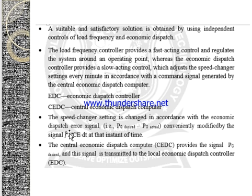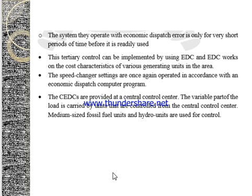While considering the speed change settings, when changed in accordance with the economic dispatch controller, it is modified by the signal ACE — specifically the integral ACE — at that instant of time. The CEDC provides the signal and this signal is transmitted to the local ADC. The system which operates with the economic dispatch error does so for only a very short period of time before it is readily resolved. This territory control can be implemented using EDC, which focuses on the cost characteristics of the generating units, and the speed change settings are operated in accordance with an economic dispatch computer program.